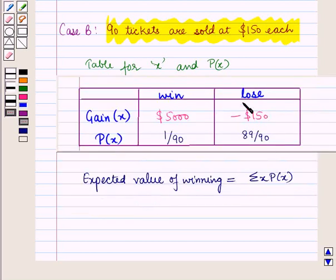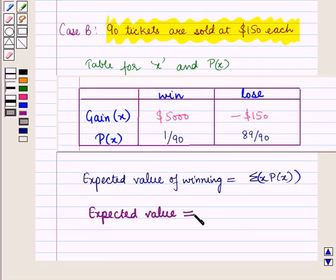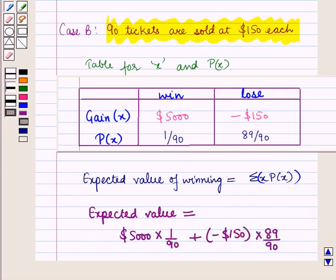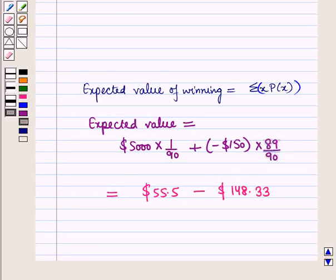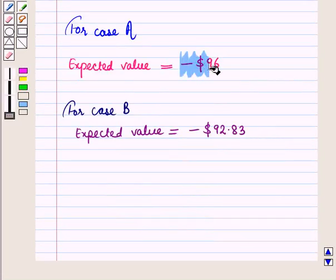Using the values in this table, we can find the expected value of winning, equal to summation of X times P(X). The expected value equals $5,000 times 1/90 plus minus $150 times 89/90. This gives $55.56 minus $148.33, which equals minus $92.83. So for Case A the expected value is minus $96, and for Case B it is minus $92.83.